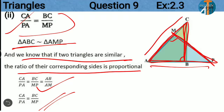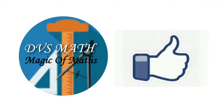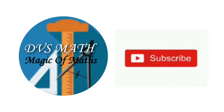In summary: in two triangles, using the given data that two angles are 90 degrees and taking the common angle A, by AA similarity criteria we proved the two triangles are similar. Then, since similar triangles have corresponding sides in the same ratio, we proved sub-question 2. That's question number 9. For more exercise questions, subscribe to my channel. Keep watching, thank you.